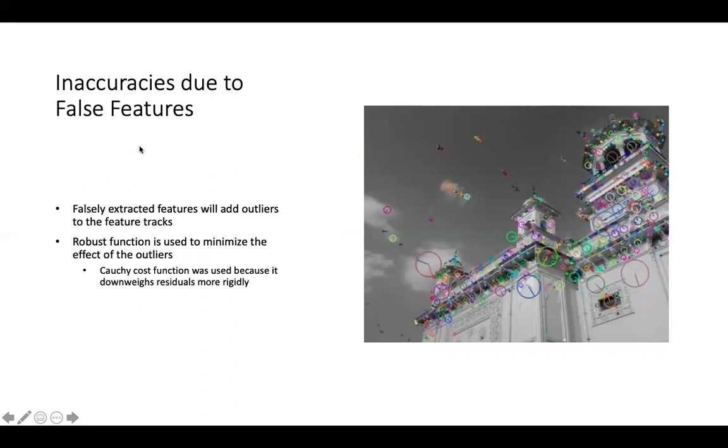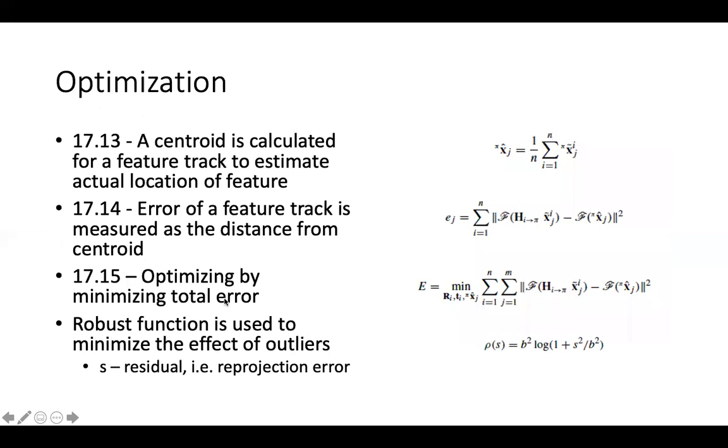The last issue in this model that the paper talks about is inaccuracies due to false features. Often, features extracted from images have false features. For example, in this image, this point right here is just a random point in the sky. That would have a big effect on the detection of feature tracks, and to minimize that effect, a robust function is used to minimize the effect of outliers. The paper talks about how it's important to select the right cost function because it will have a big effect on how outliers are treated. The paper describes using a Cauchy cost function because it downweighs the residuals more rigidly.